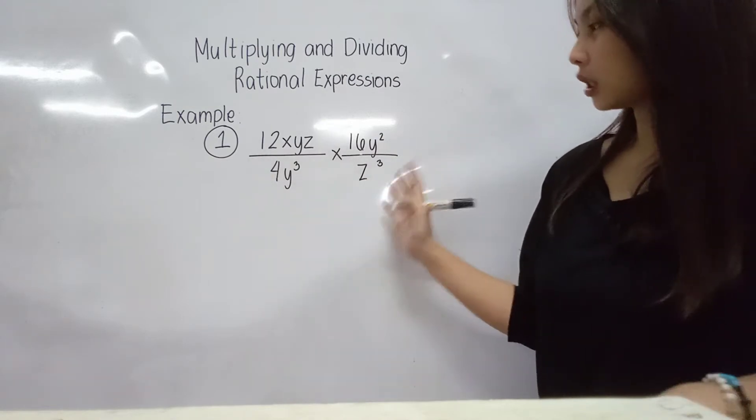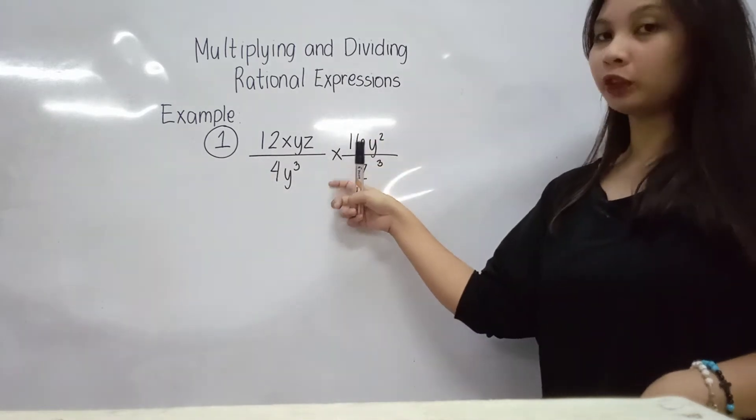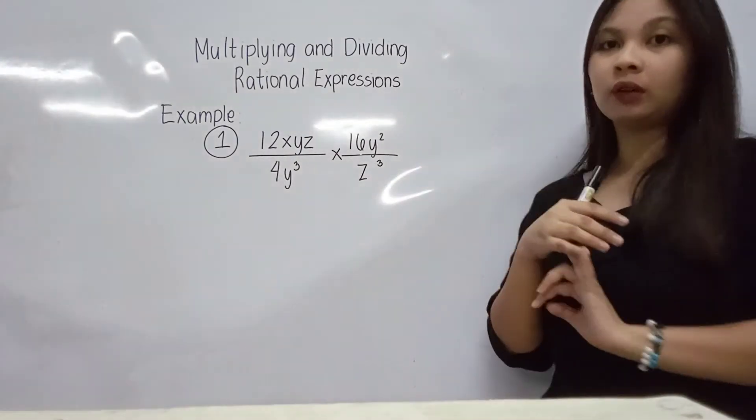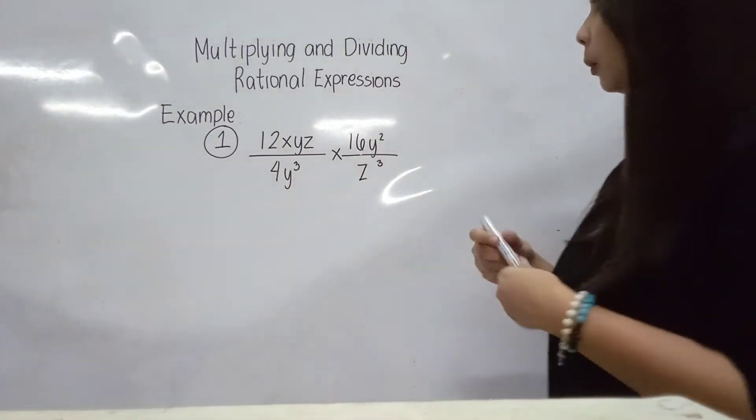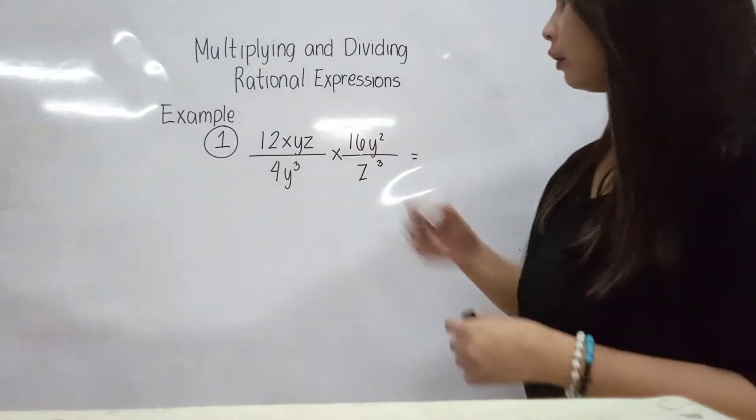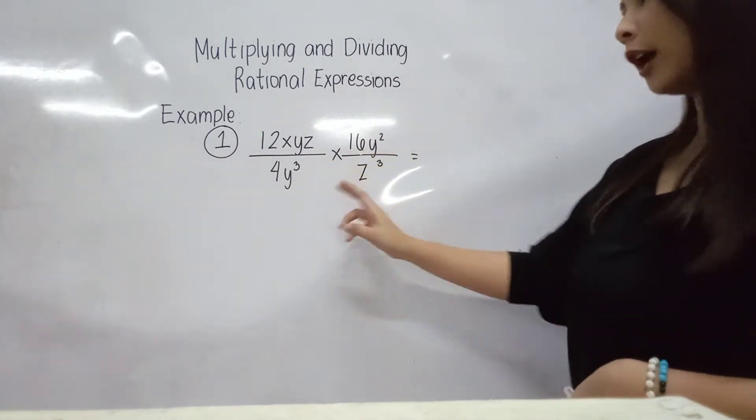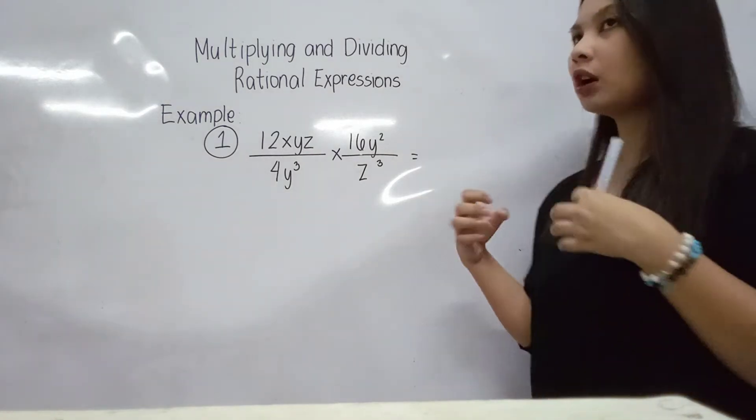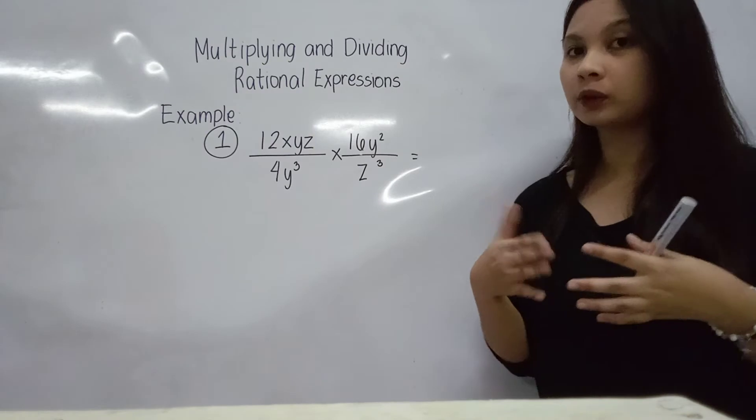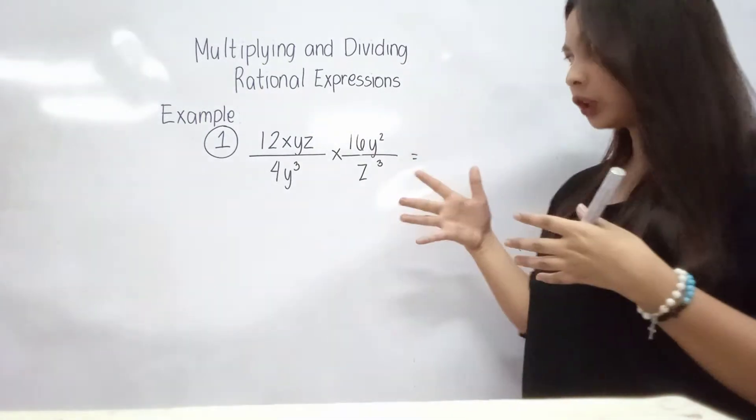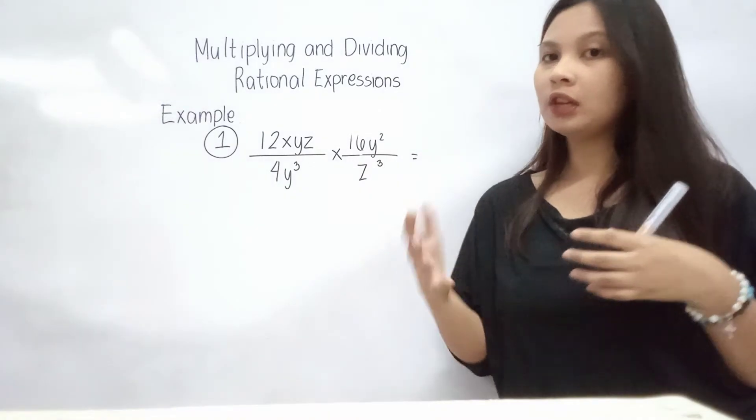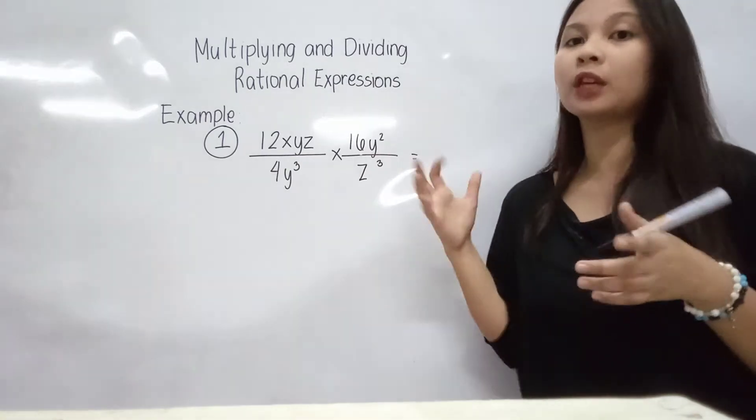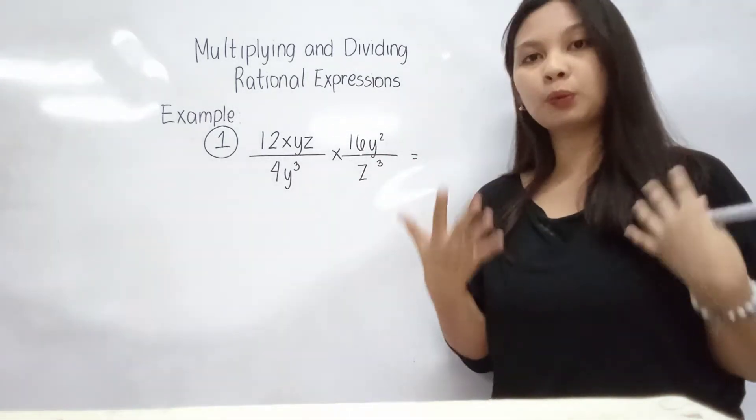So multiplying and dividing rational expressions. I have here an example. So first example is multiplication. We have 12xyz over 4y cubed times 16y squared over z cubed. So dito, para mas mabilis, as long as you can cancel out, do it. Tingnan lang kung sa tingin nyo may maka-cancel out sila.